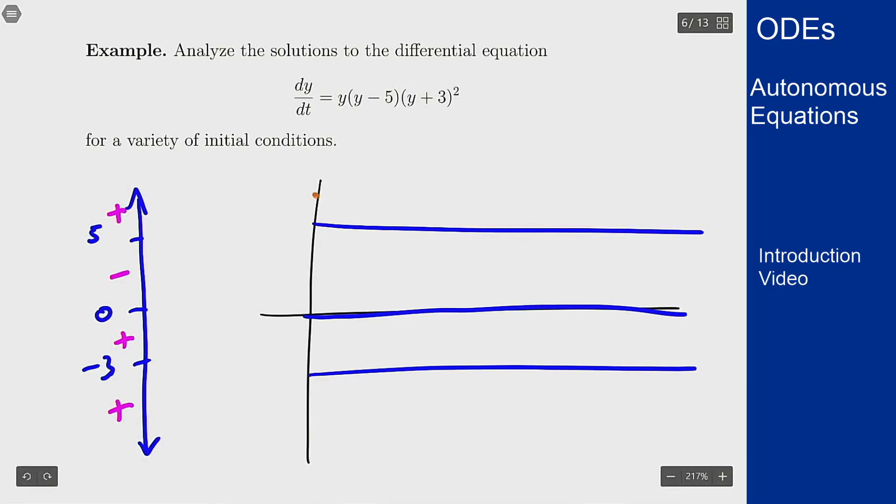and minus three and then in between I just follow the directions. So if I were to start up here I see a plus sign so going up so my solution is going to go up this way. In here we're going down so something like that, in here we're still going down, here we're going up, and then here we are still going up.